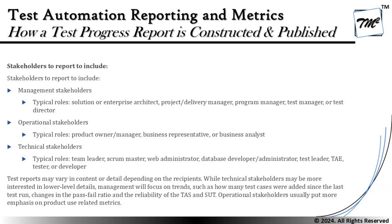Management stakeholders typically include solution or enterprise architect, project or delivery manager, program managers, and test manager or test director. Operational stakeholders include product owner or product manager, and business representatives or business analysts. Technical stakeholders include team leaders, scrum master, web administrator, database developer, administrator, test leader, test automation engineer, functional or manual tester, or a developer. Note that sometimes third-party industries also need to be notified about reports. If they are an active contributor to your project, they do become your stakeholders.